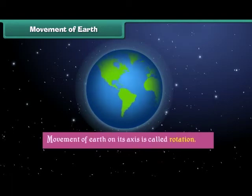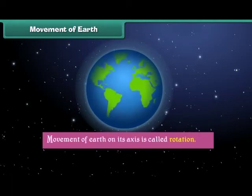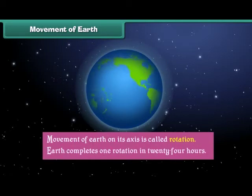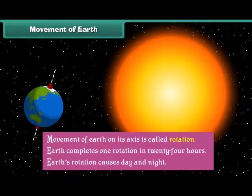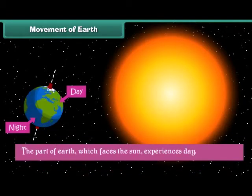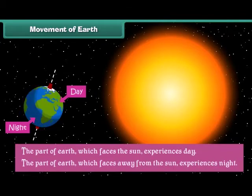Earth shows two types of movement. Movement of Earth on its axis is called rotation. Earth completes one rotation in 24 hours. Earth's rotation causes day and night. The part of Earth which faces the Sun experiences day, and the part which faces away from the Sun experiences night.